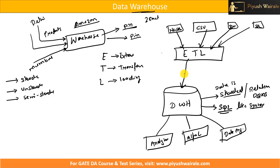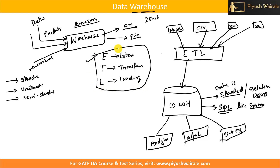We are going to discuss ETL in detail in upcoming lectures, but just understand the full form. E means Extract — extracting data from multiple sources. T means Transform — transforming the data into a required format so that we can load it into a data warehouse. L means Load — loading that transformed data into the data warehouse.